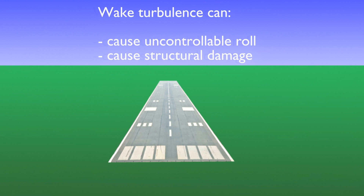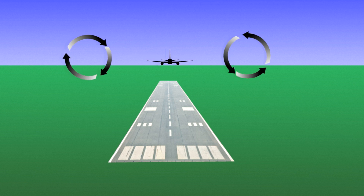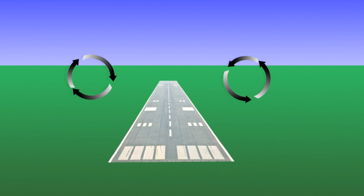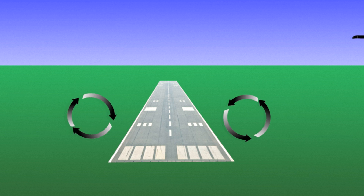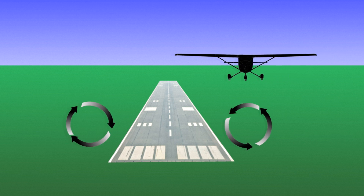At any altitude, it would be possible for wake turbulence to damage the airplane if it were encountered. It can't be seen, so pilots have to learn to visualize and avoid wake turbulence. Since the vortices sink and dissipate, wake turbulence avoidance usually comes down to staying above the flight path of the generating airplane.